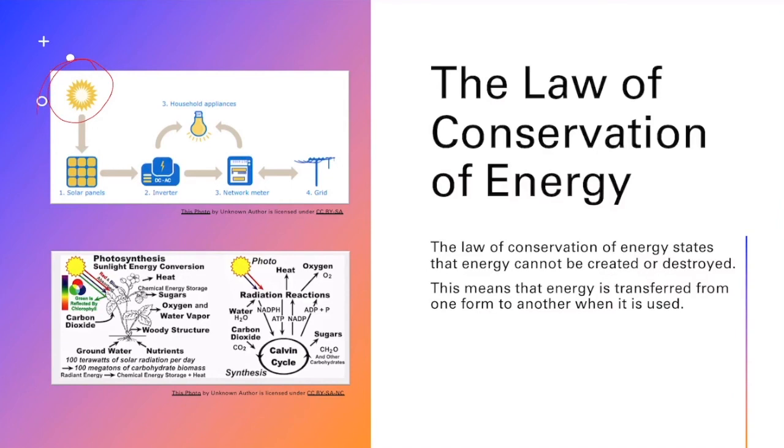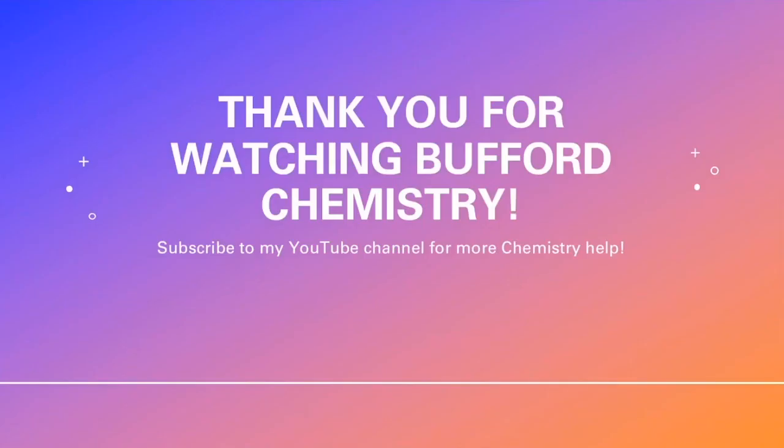And then another example of where energy is being transferred into another form would be photosynthesis. So radiant energy from the sun is being absorbed by plants and being used as an energy source for those plants to be able to convert their nutrients into the sugars that they need to survive.